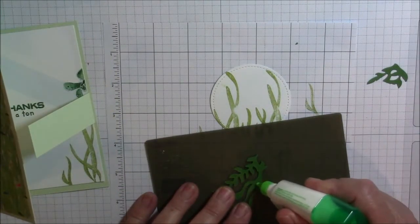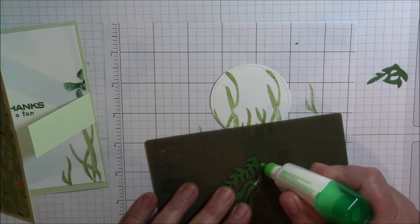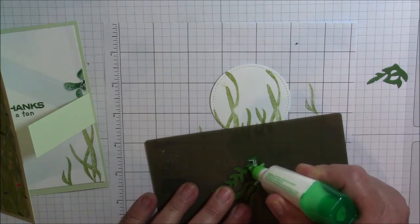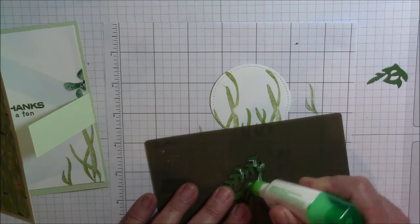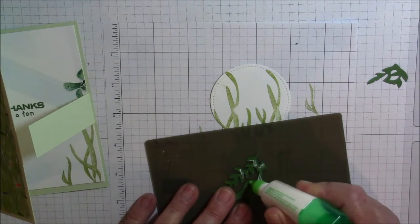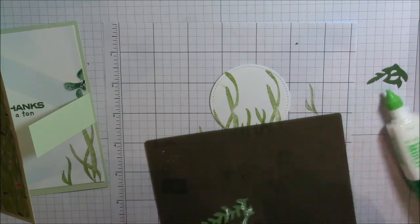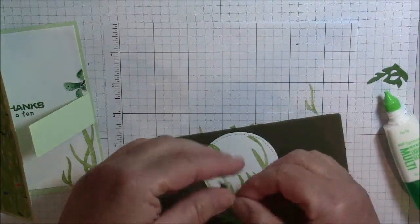I am only going to be putting adhesive towards the bottom. I am okay with it flapping up at the top and depending on how my turtle fits on the front here I may flap its leg underneath part of the greenery.